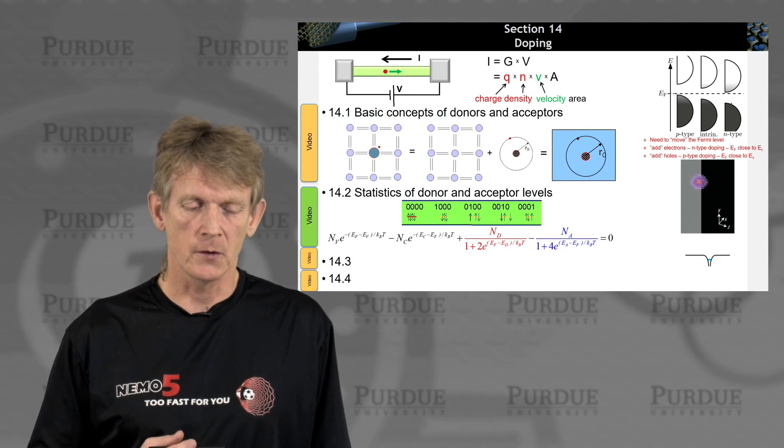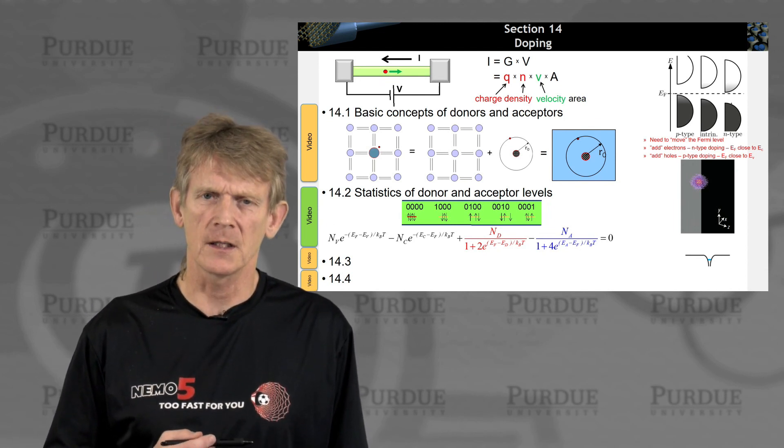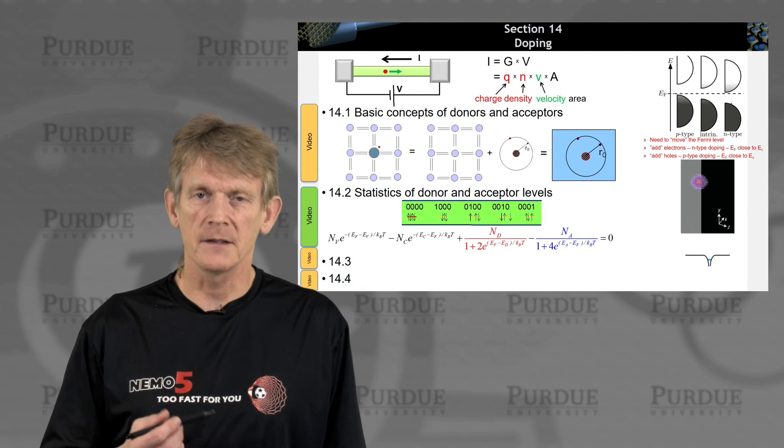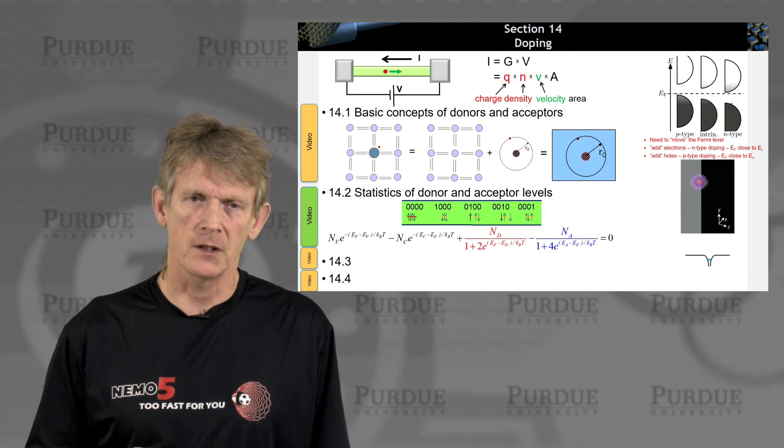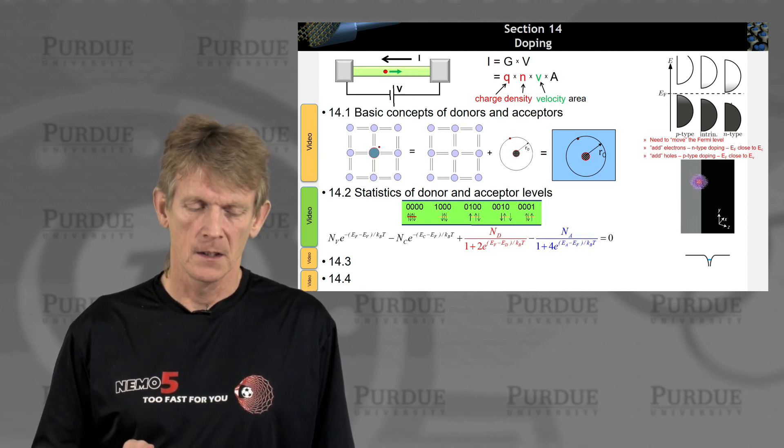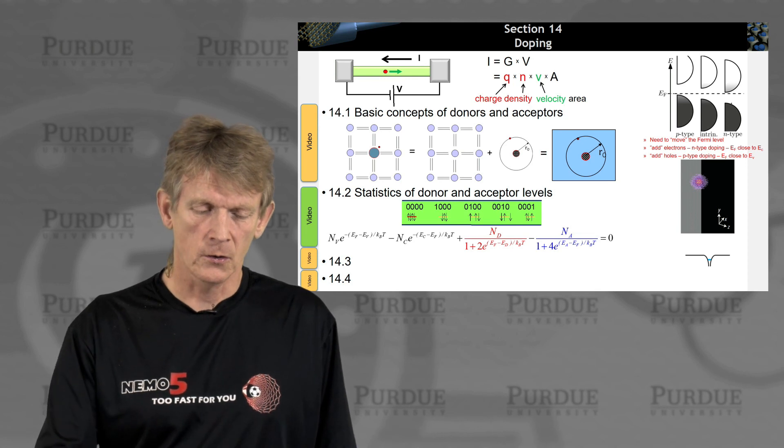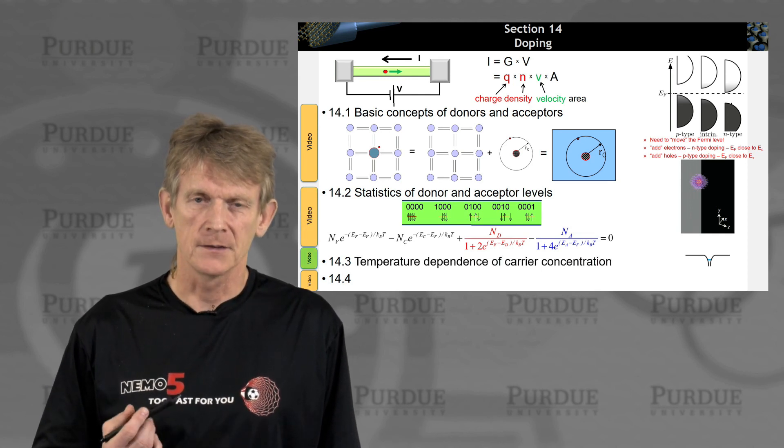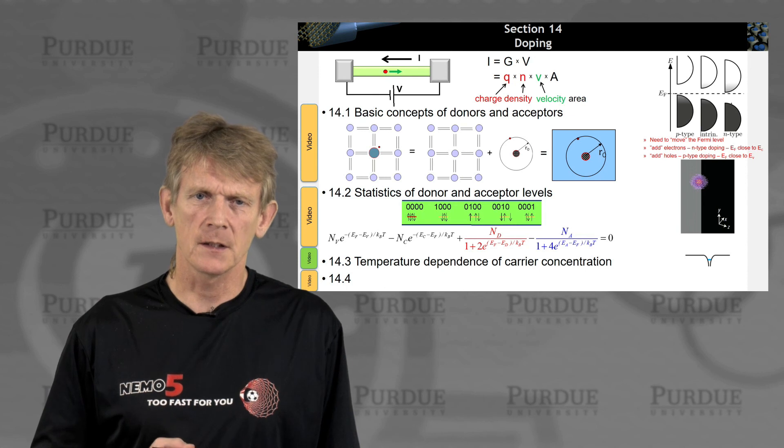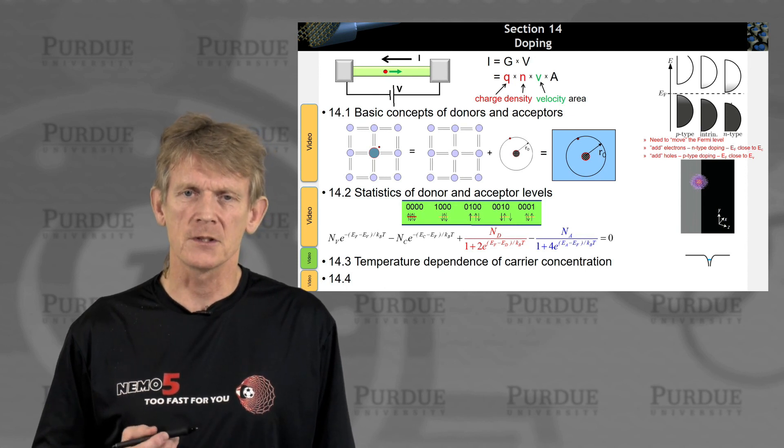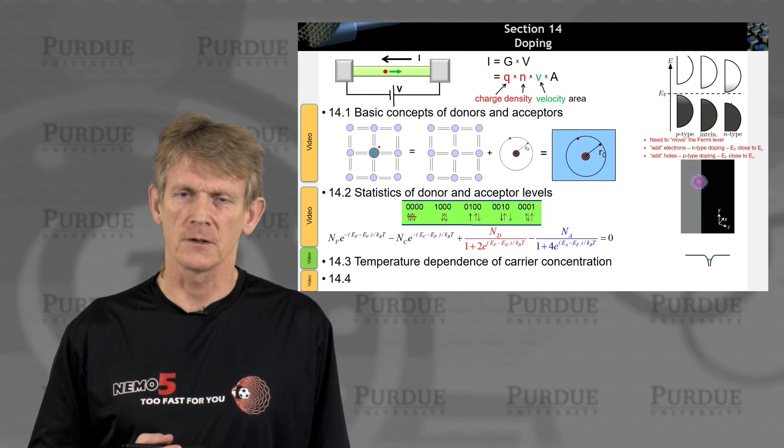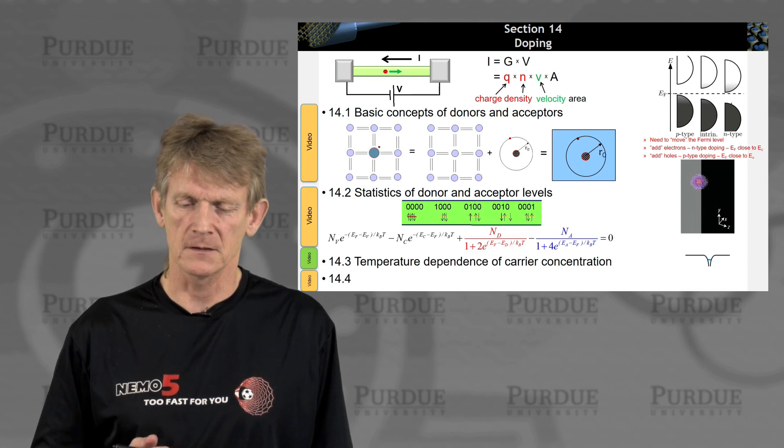So here is this expression for the statistics of donors and acceptors. And it's derived, again, by partition functions of occupancies of states. So that concludes the discussion of statistics of these donors and acceptors. And next we'll look at the temperature dependence of these carrier concentrations. That's going to be in the next section.